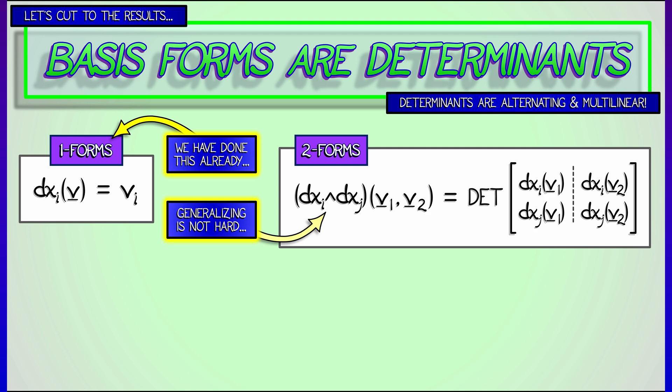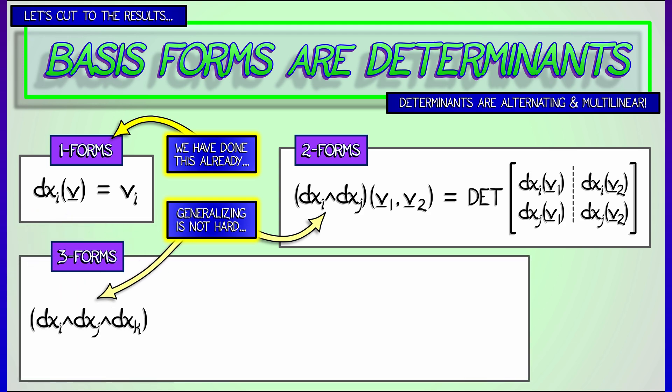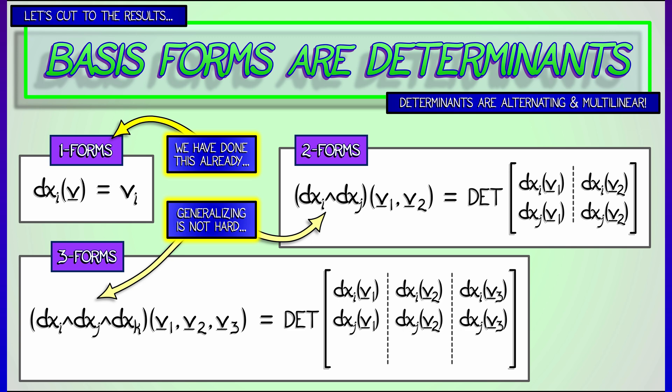And that's two forms. What are basis three forms? Something like dx_i wedge dx_j wedge dx_k. You feed that three vectors, v1, v2, v3. What do you do? You take the determinant of a three-by-three matrix. What is that matrix? Well, the first row is the i-th components of v1, v2, v3. The second row is the j-th components. The third row is the k-th components.